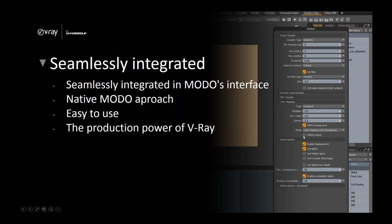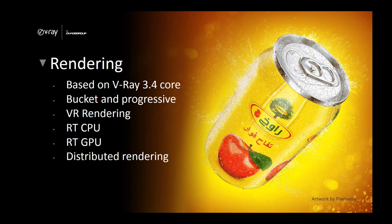Rendering in V-Ray for Modo is based on the V-Ray 3.4 core, meaning all of the speed optimizations created for V-Ray are now in Modo. You have image-based sampling and the V-Ray denoiser, which we'll see today, allowing you to create much more beautiful images in less time. For sampling options you have bucket and progressive. The main difference: with bucket, one core of your CPU works on a bucket and then proceeds to the next.